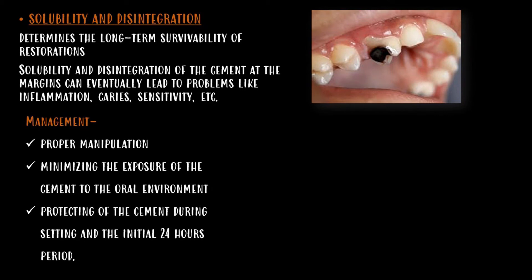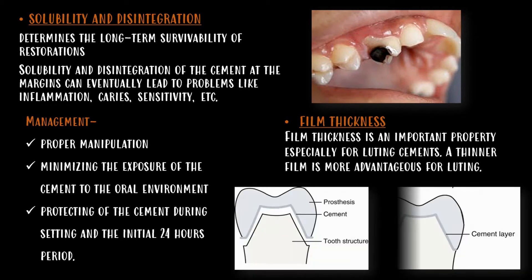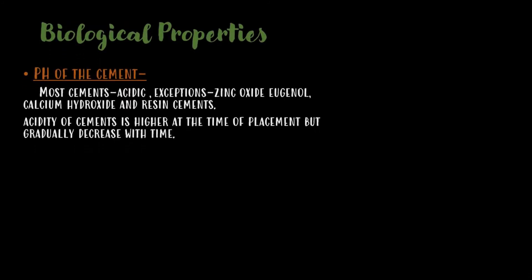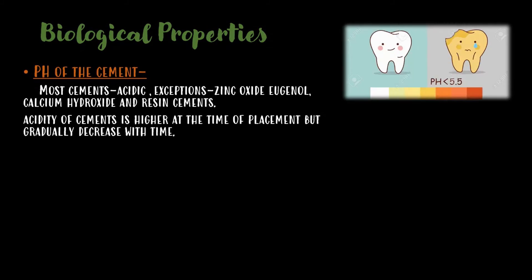Film thickness is an important property, especially for luting cements. A thinner film is more advantageous for luting. Coming to the biological properties, the pH of cement: most cements are acidic, with exceptions of zinc oxide eugenol, calcium hydroxide, and resin cements.